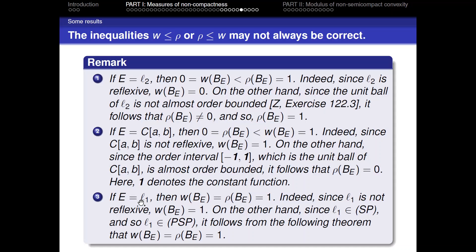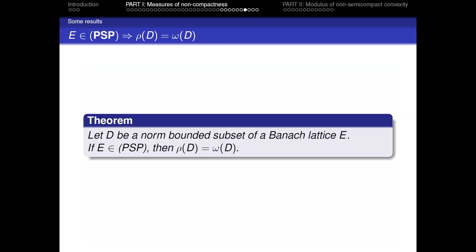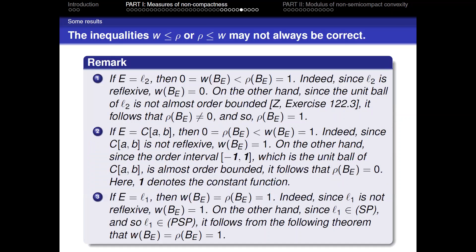For E = ℓ¹, since ℓ¹ is not reflexive, ω(B_E) = 1. We present a new theorem: if D is any norm-bounded subset of a Banach lattice E and E has the positive Schur property, then ρ(D) = ω(D). Using this theorem, we obtain the equality which equals 1.